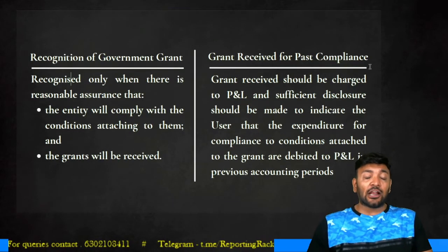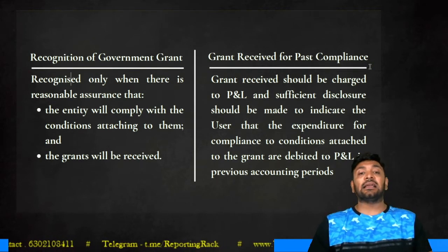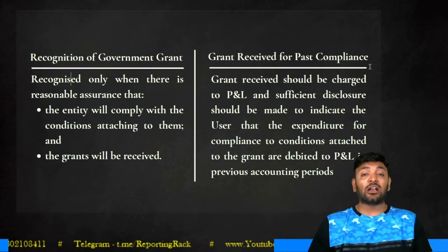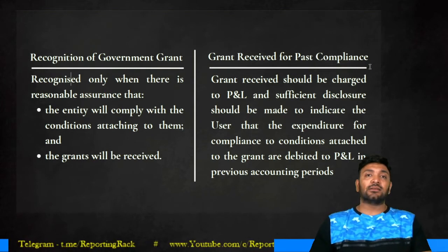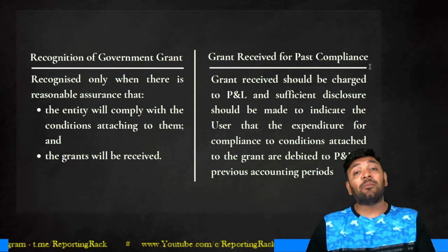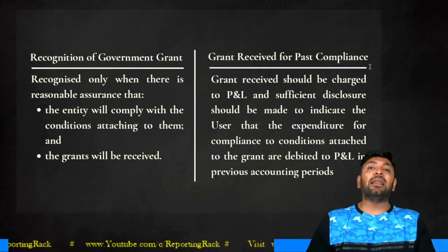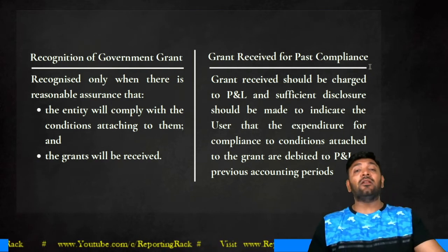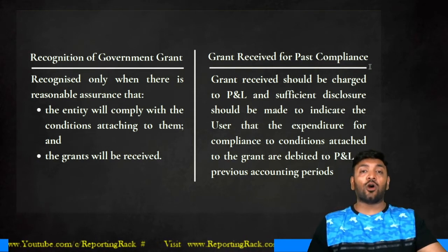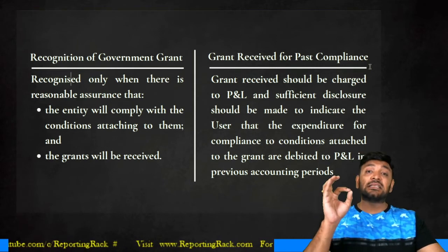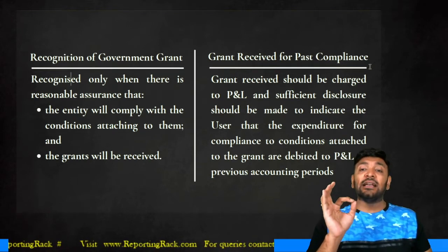Recognition occurs when it is reasonably certain the enterprise will comply with conditions and the grant is receivable. What if the grant is received for past compliance — meaning conditions were already satisfied and the grant is received today? If 70% of unskilled and semi-skilled labor was already given to local people, the grant is a result of past compliance. In such cases, the entire grant amount should be credited to P&L.